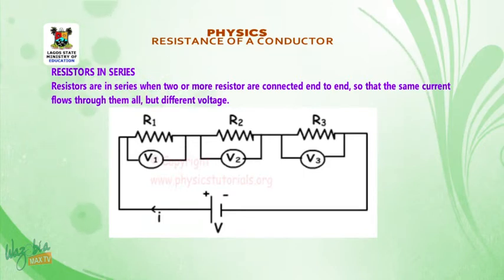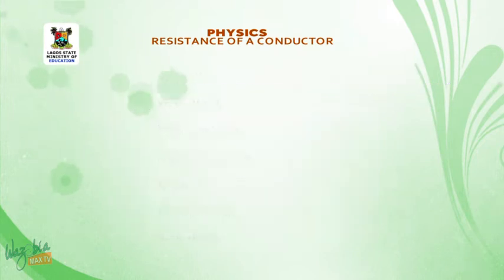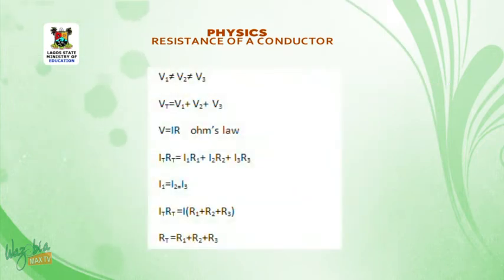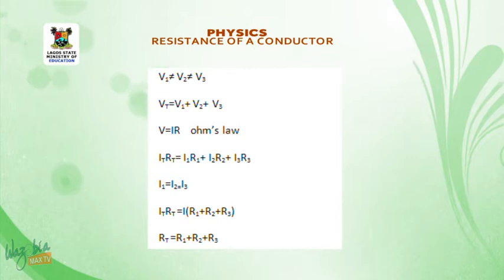We have resistors R1, R2, and R3. The same current flows through them but different voltages. If there is different voltage, then V1 is not equal to V2, is not equal to V3. Therefore, VT — the total voltage across the circuit — is equal to V1 plus V2 plus V3.